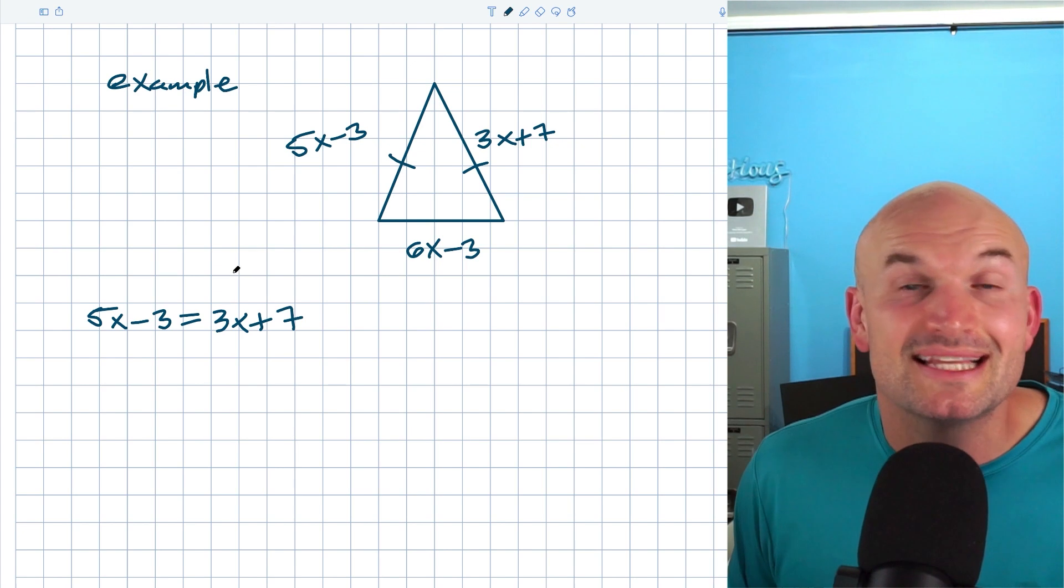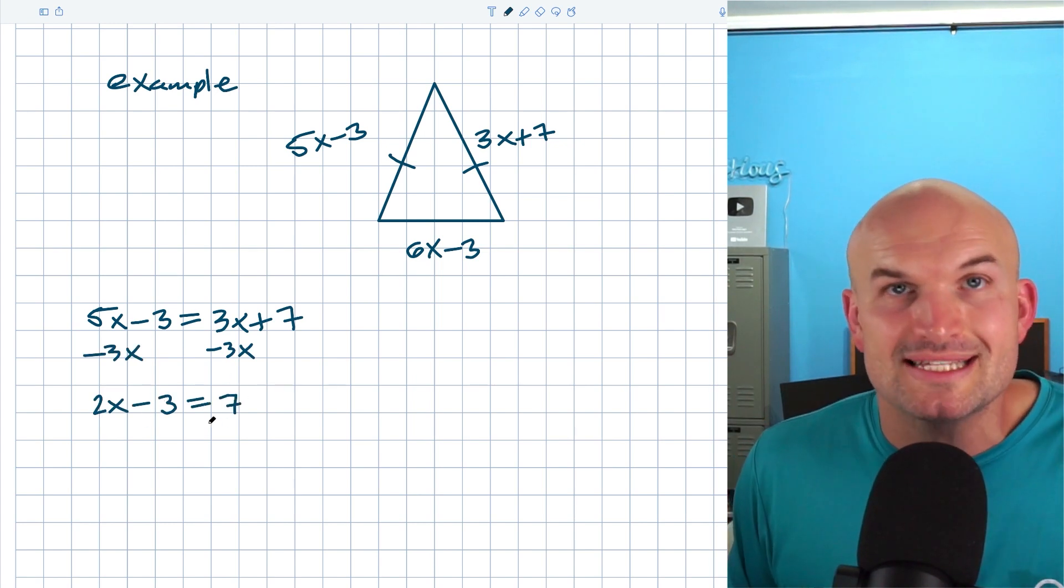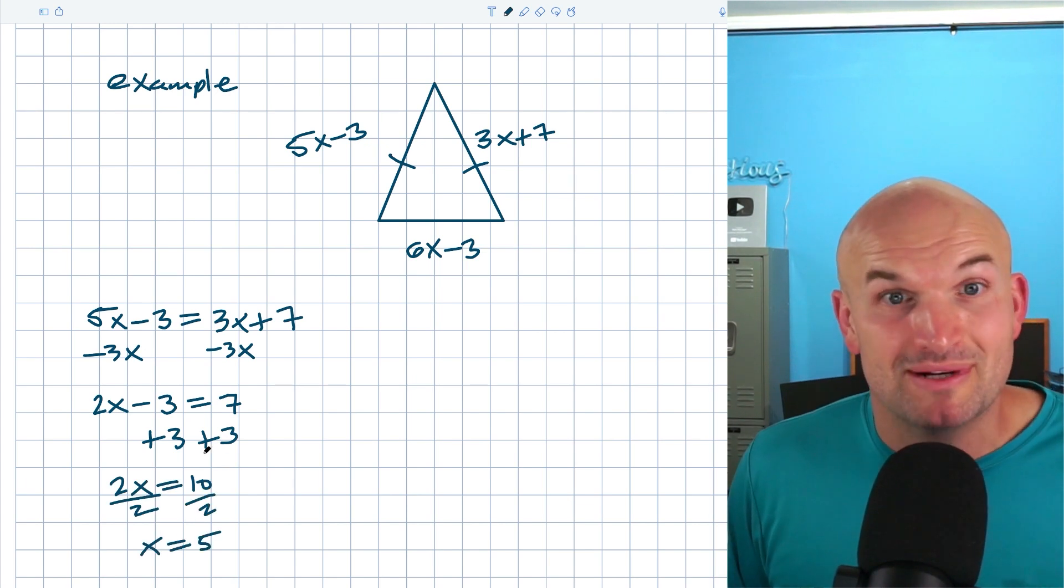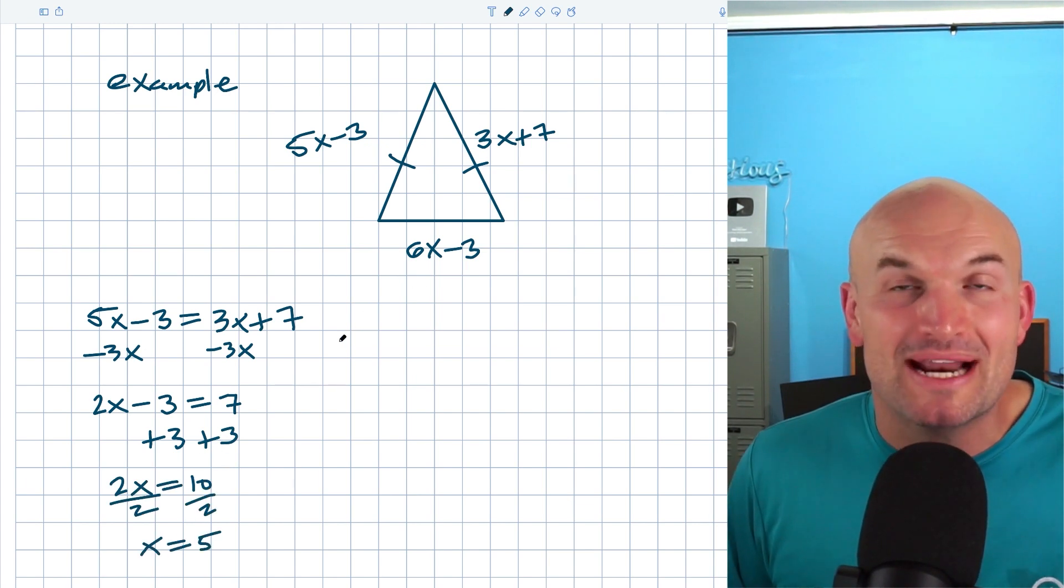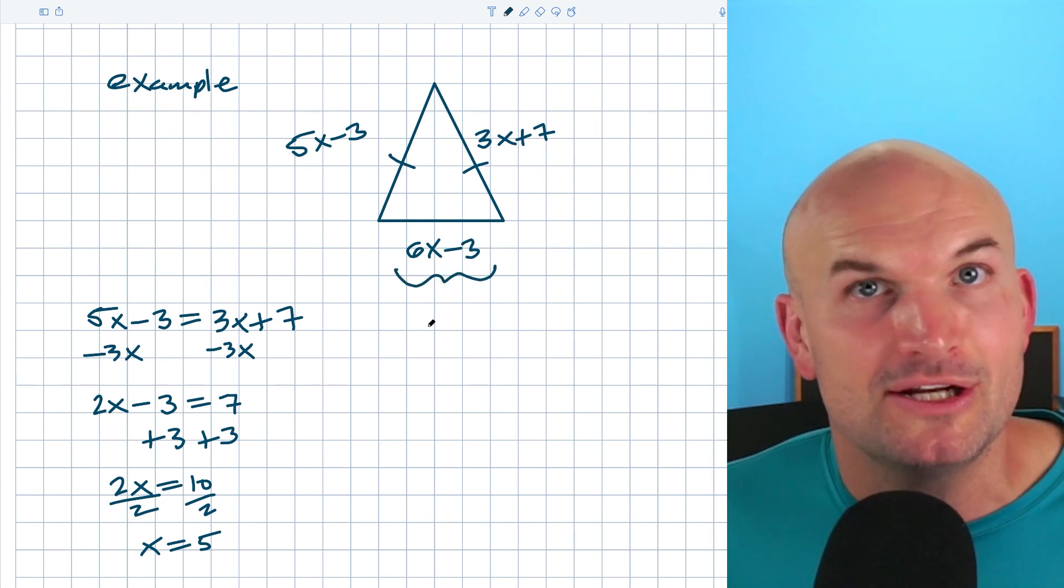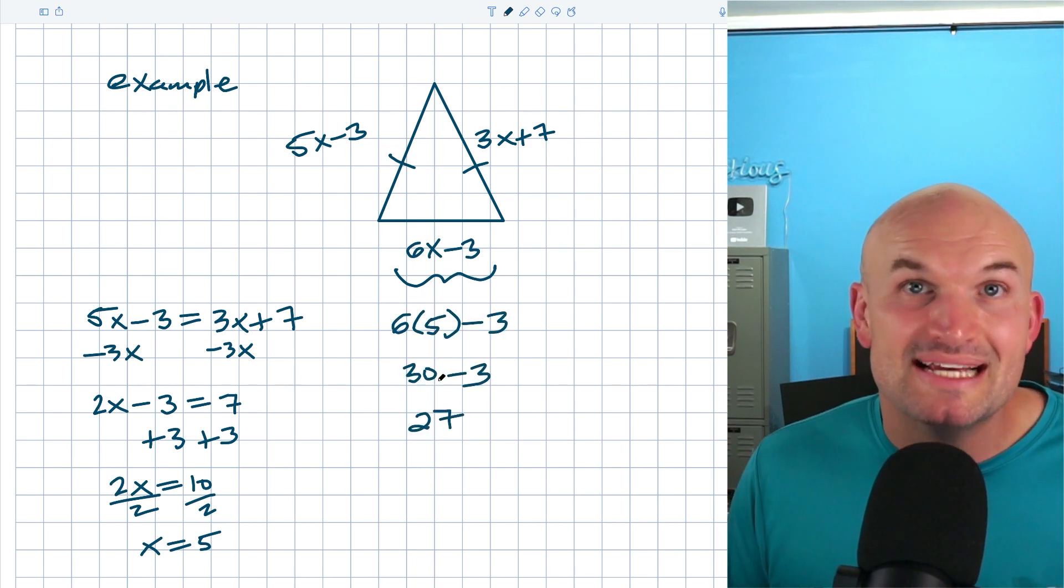Now again, just like I did in the last problem, what I'm going to do is I'm going to get the X's to the same side. Again, in this example, I'm going to do that to the left-hand side. Okay, so now I have a two-step equation. I'm going to add 3 to both sides and then divide by 2. Okay, so now I know that X equals 5. But again, that is not the answer. That is not what I was asking for. I want to know what the base of that triangle is, this side length. So then all I'm simply going to do is again plug 5 in for X. And you can see now I get a base of 27.